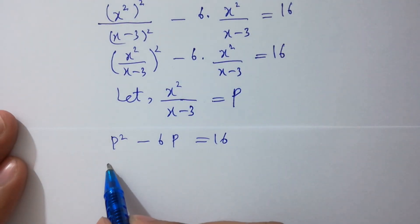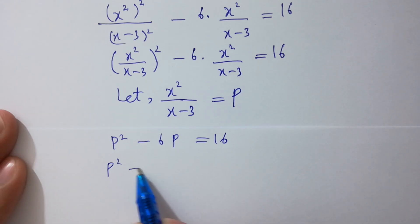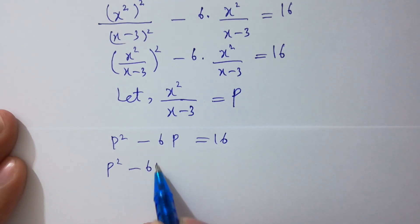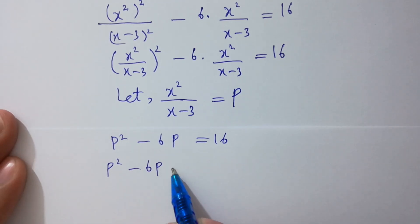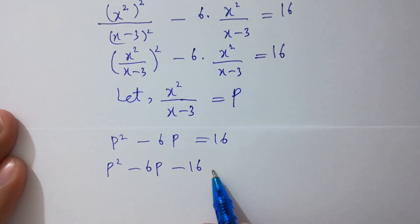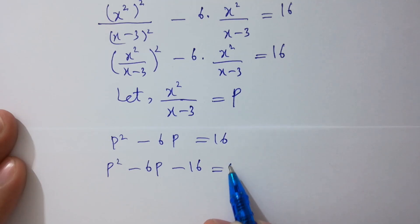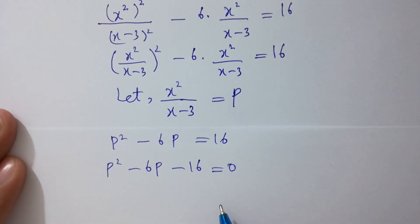Here, p² minus 6p minus 16 equals 0, which is our quadratic equation.